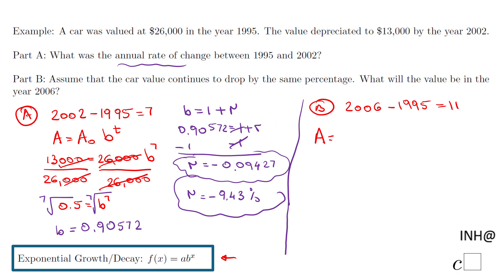We had A equals A₀ - A₀ is that 26,000 - times now remember we have the b, we did it. Hopefully you still have it in the calculator, I do have it.